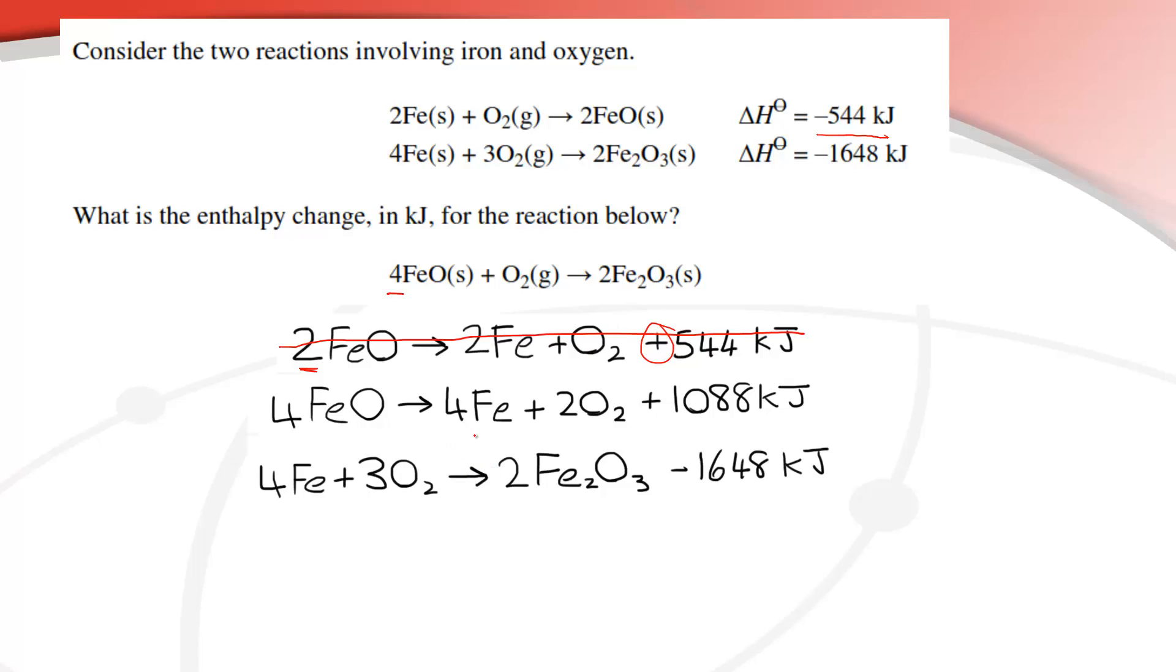So what we do next is we cancel out what's the same on each side of the arrow. So those four Fe's there and those four Fe's there, they cancel. We have 2O2 on this side which cancels out the 3, so that leaves us with 1 there.